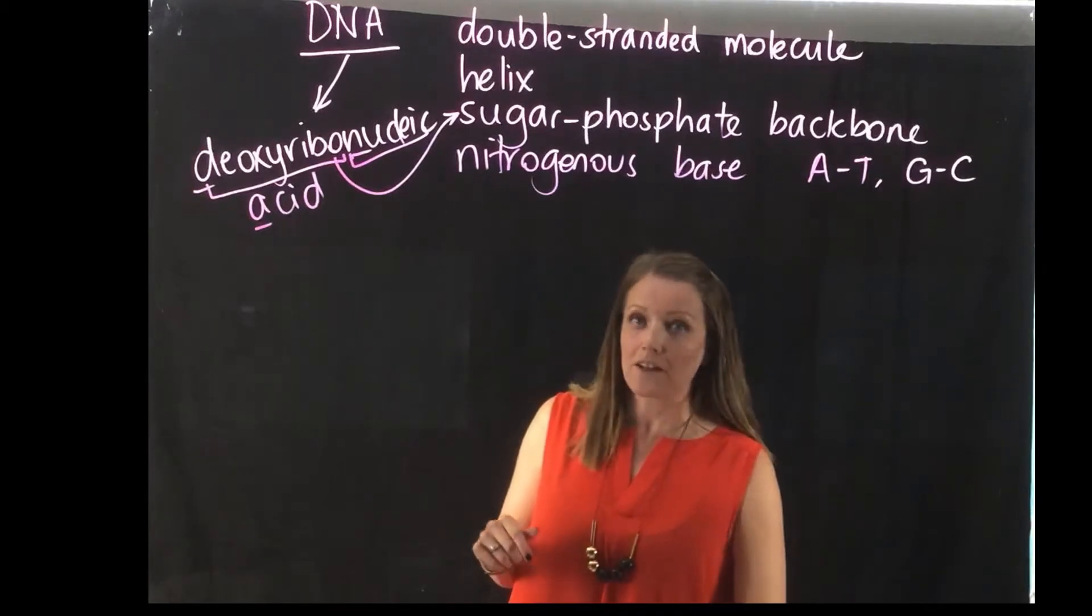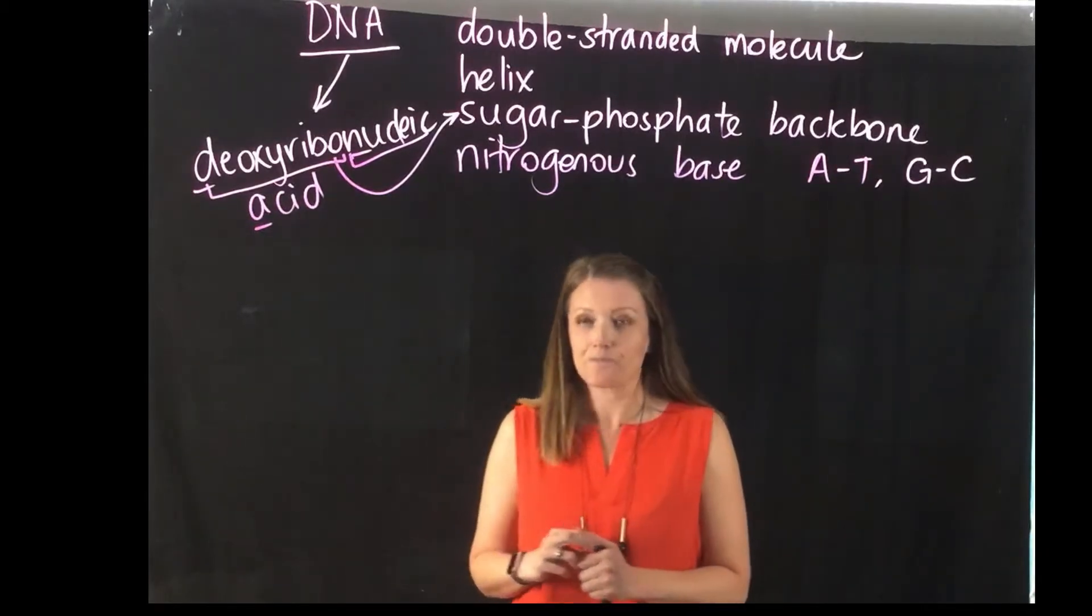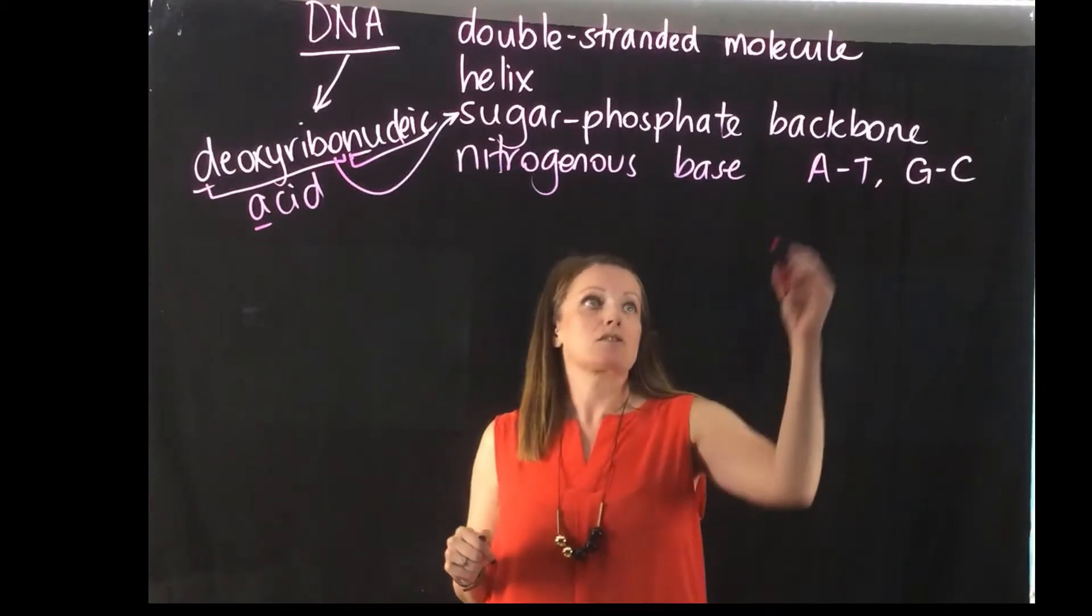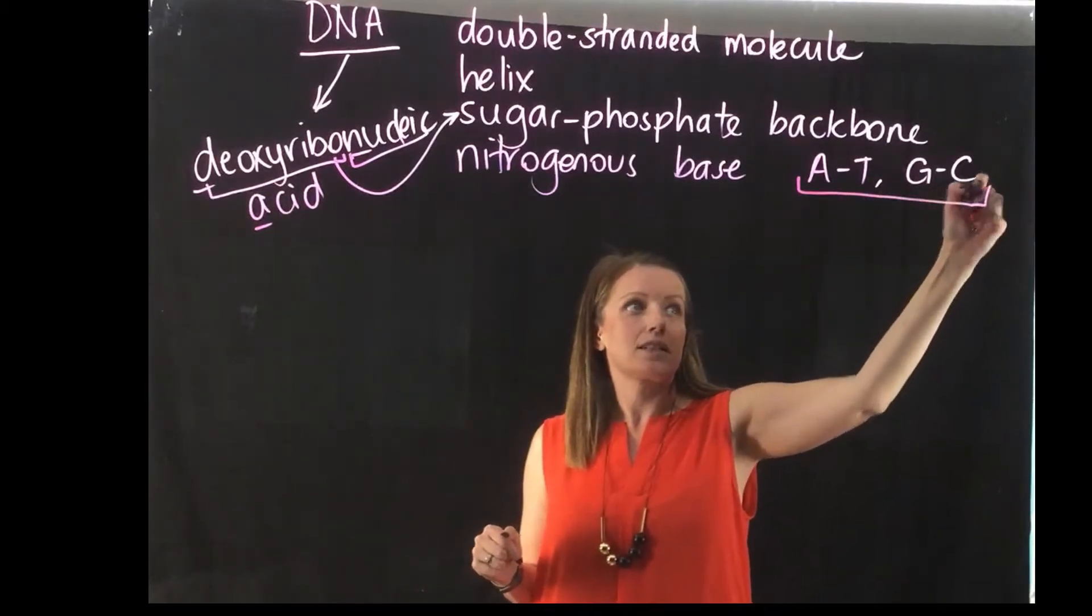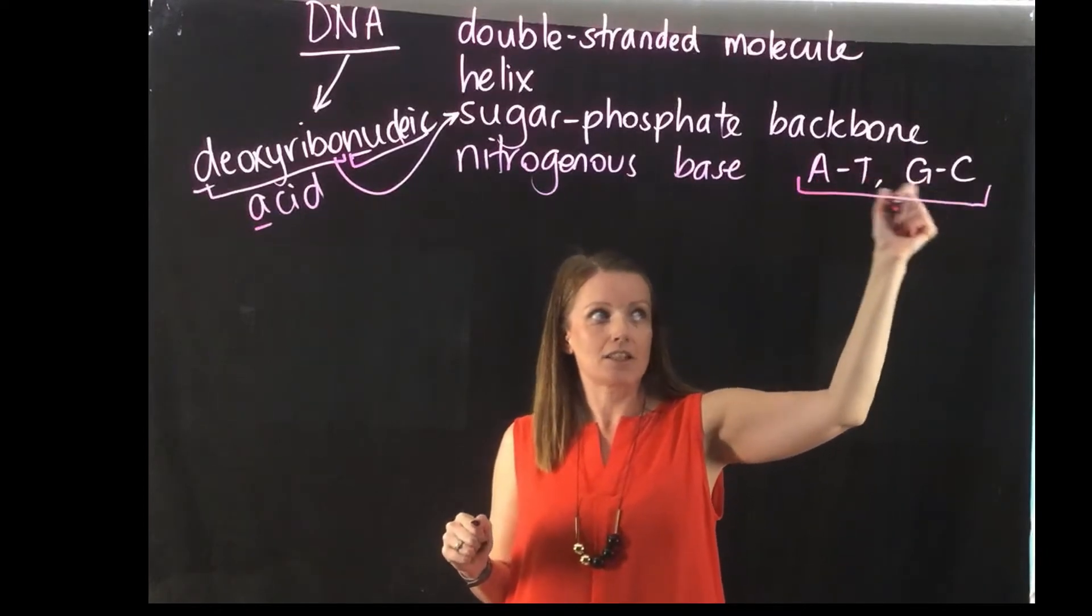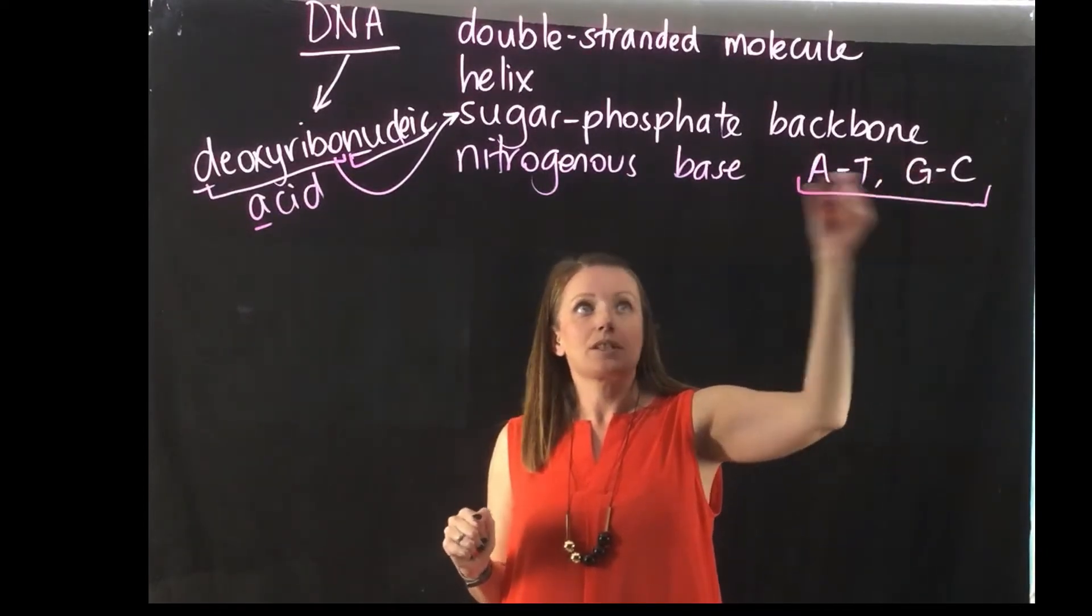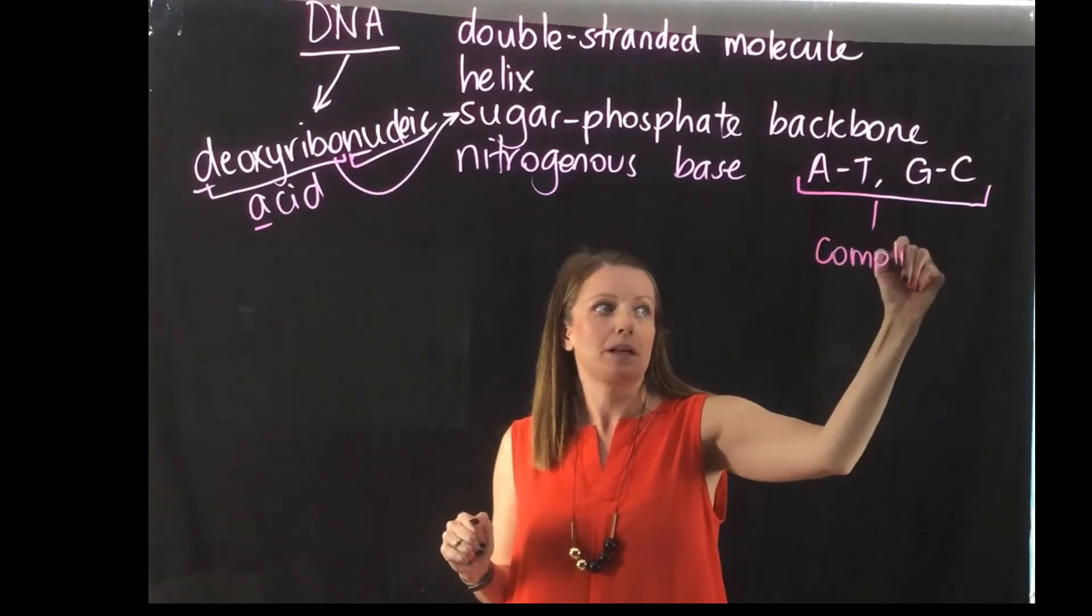We know from previous lessons that DNA makes up the 46 chromosomes that are found in the nucleus of our cells, and the DNA is broken up into genes based on the different bases. So we've got four different bases in DNA: A, T, C, and G, and they come together always A with T and G with C, which is what we call complementary base pairing.